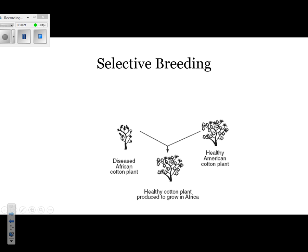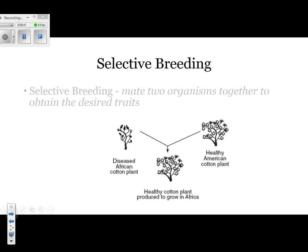What they want to do is they want to be able to grow in Africa a healthy cotton plant. They breeded the healthy American and the diseased African together and then they wound up with a tree with the trait that they wanted — a healthy cotton plant that was now able to produce cotton in Africa. This is called selective breeding. It's when you mate or breed two organisms to get the trait that you want.